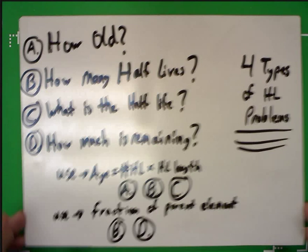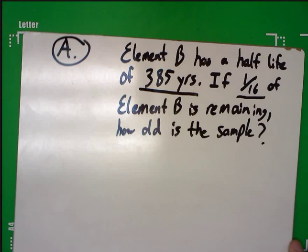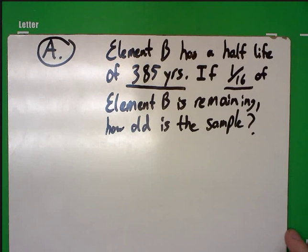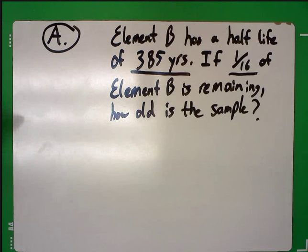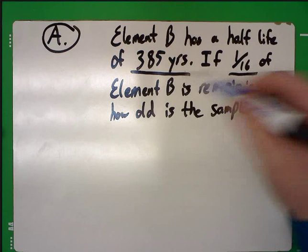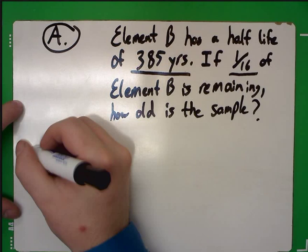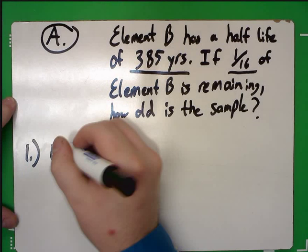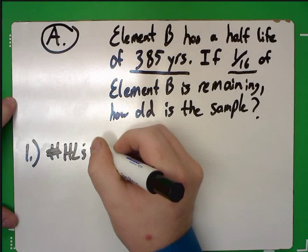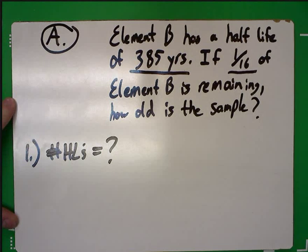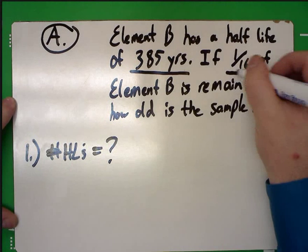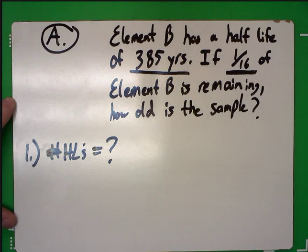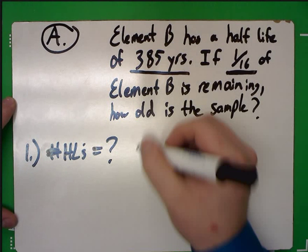Here's our A-type problem. Element B has a half-life of 385 years. If 1/16th of element B is remaining, how old is the sample? I've underlined the important variables. The first step is to figure out how many half-lives have passed. To figure that out, you need to use this fraction. Look in your notes and go to the table to figure out what 1/16th corresponds to.